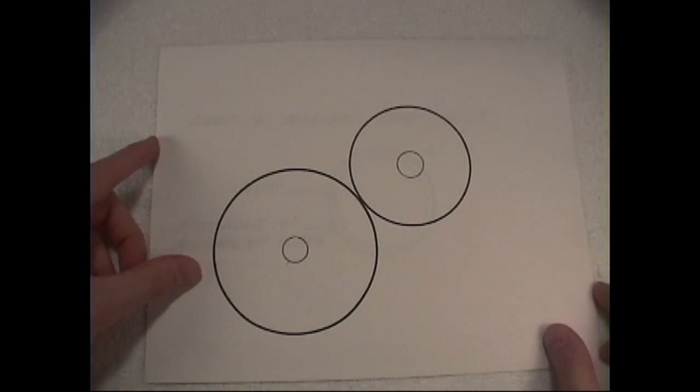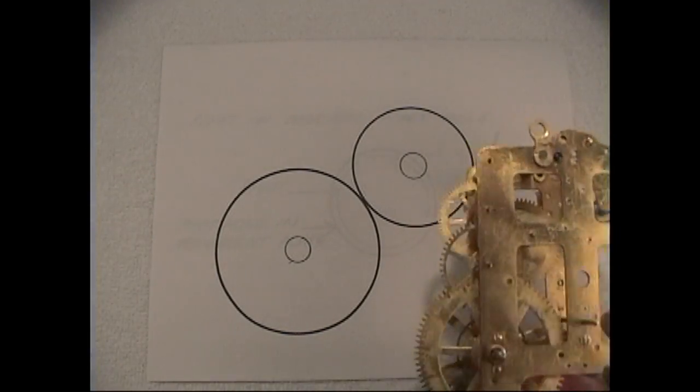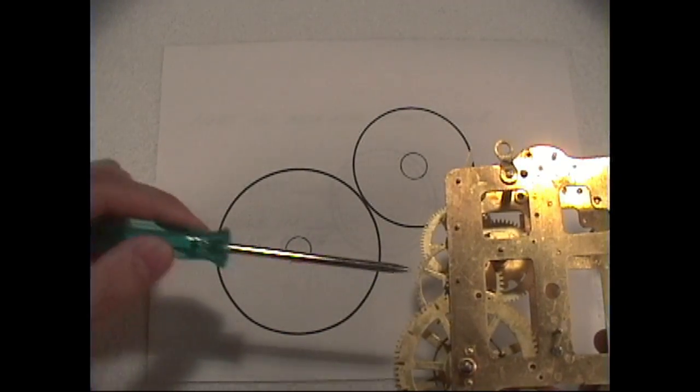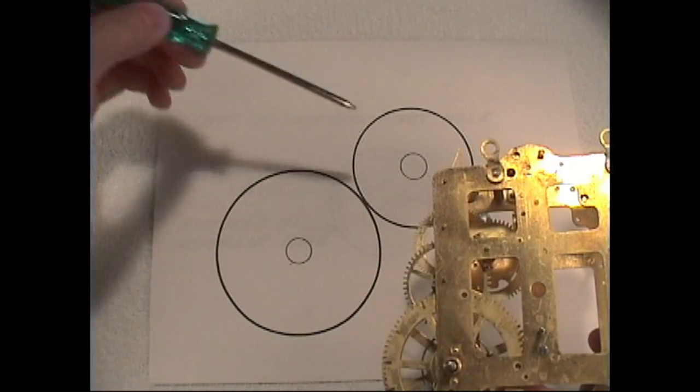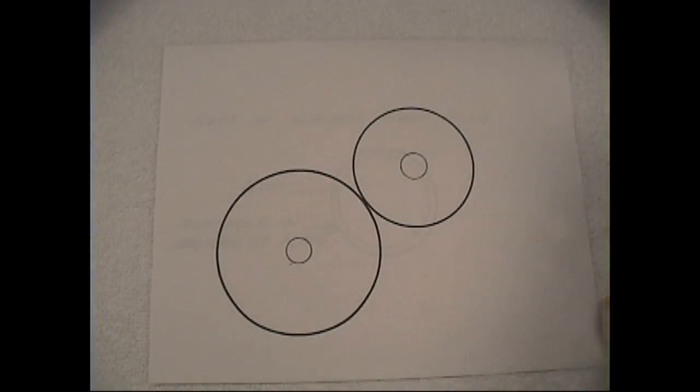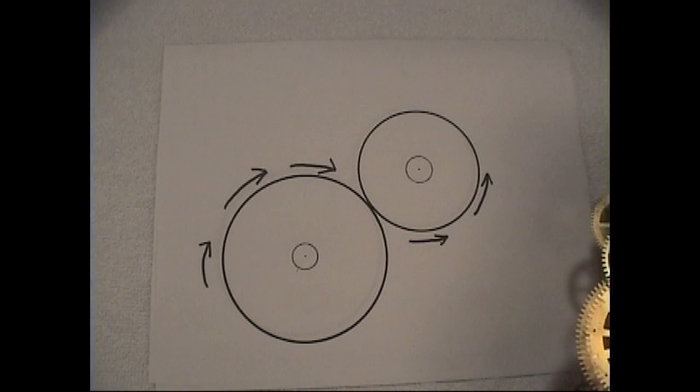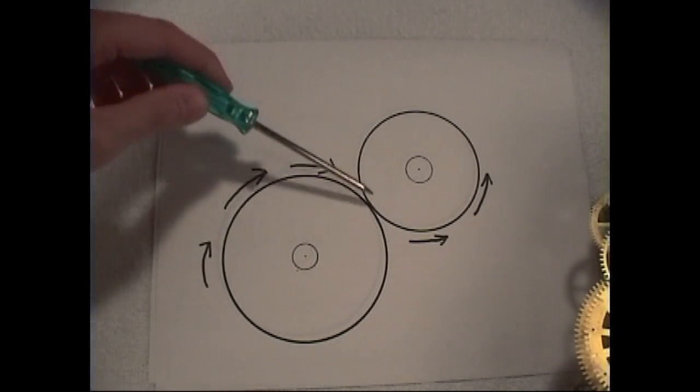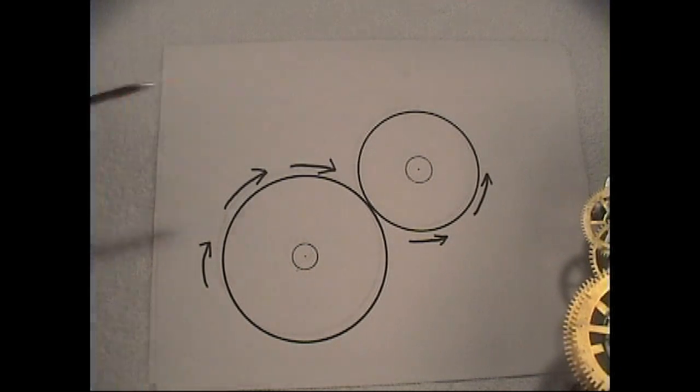Now we have a diagram of our two wheels. Here's our larger first wheel here and here's our second wheel that it's driving here. And our large wheel is driving in a clockwise motion which in turn drives the second wheel in a counter-clockwise motion.